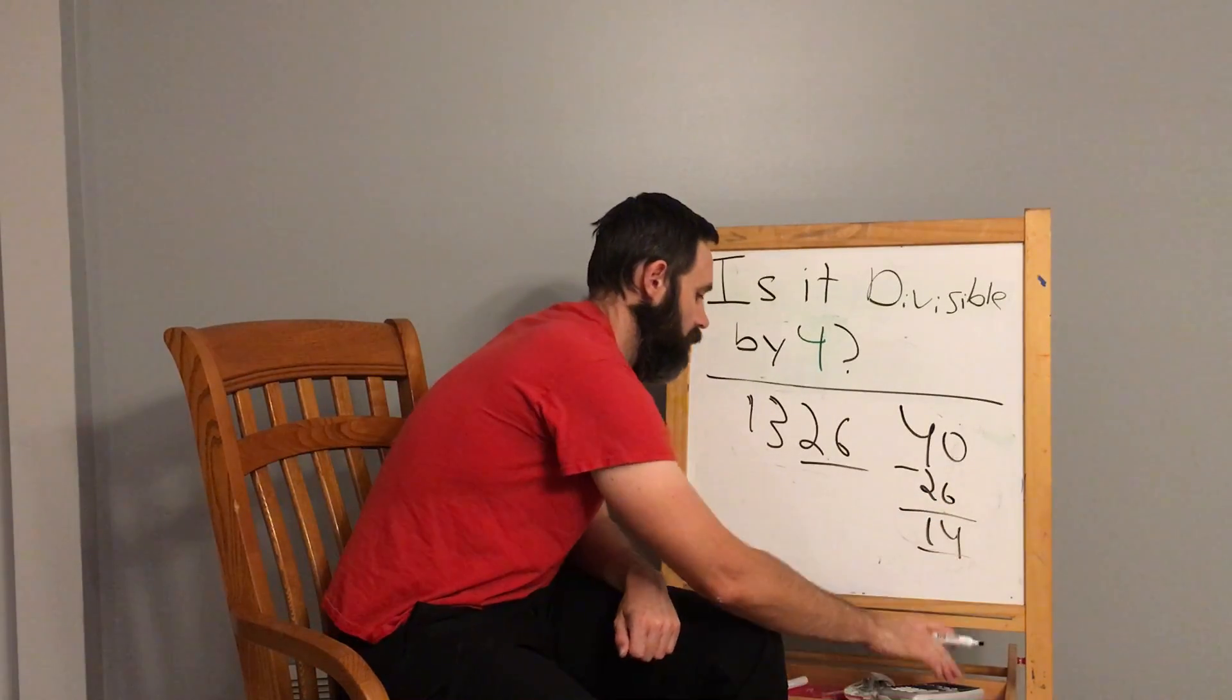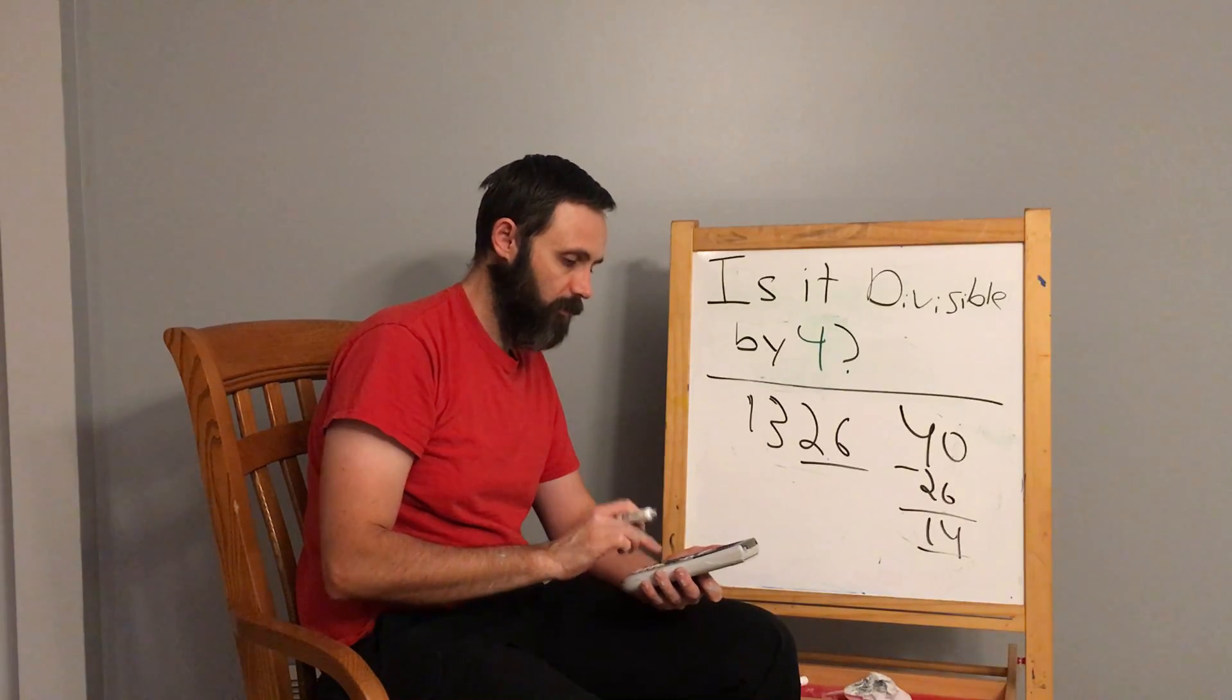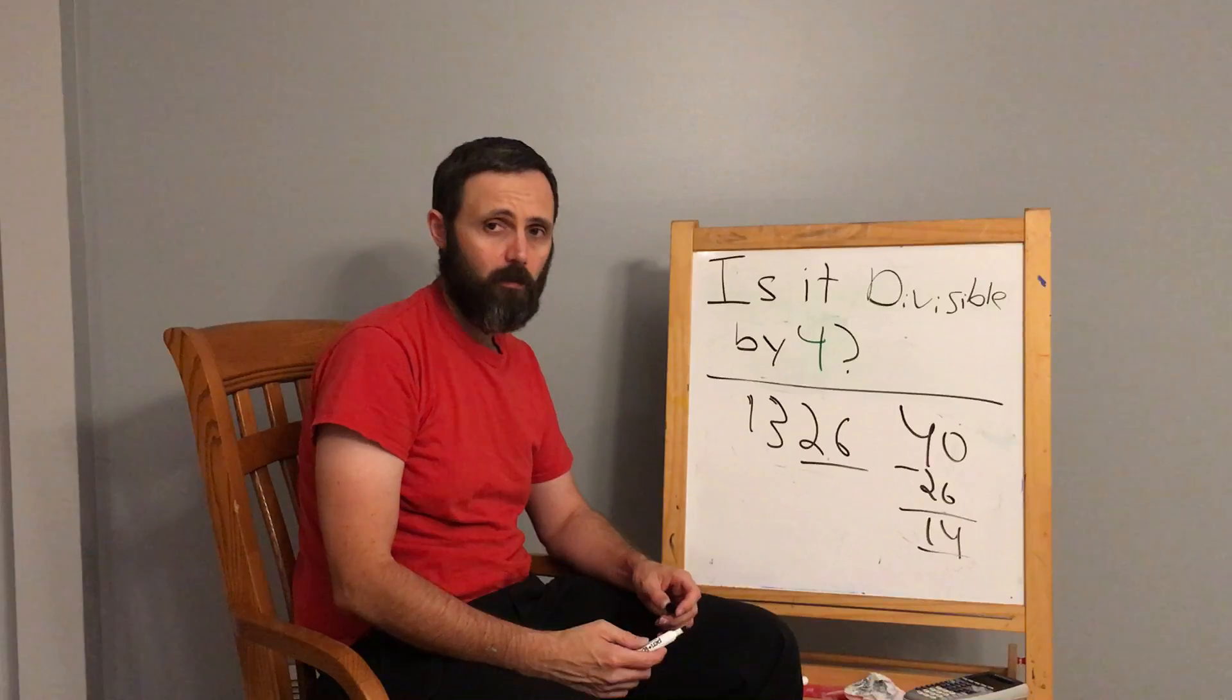14 is not a multiple of 4. So when we punch this in, 1,326 divided by 4, we get 331 and a half. There you go. That's pretty much all you need to do.